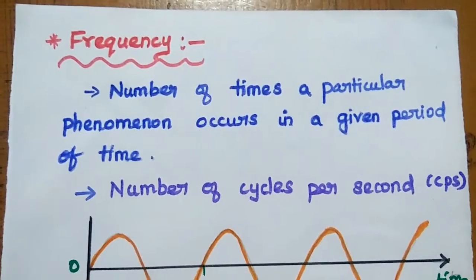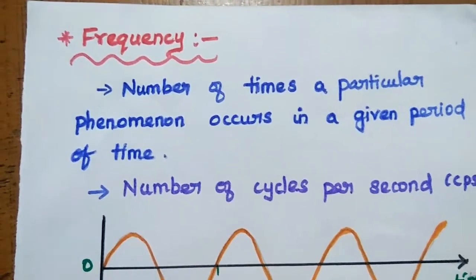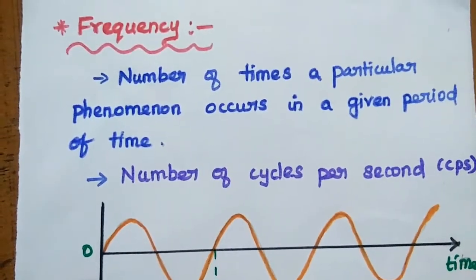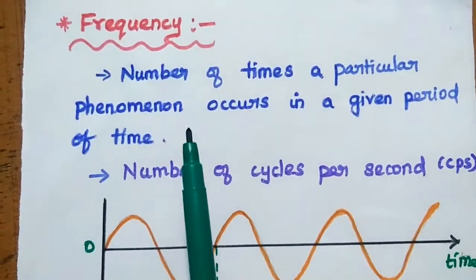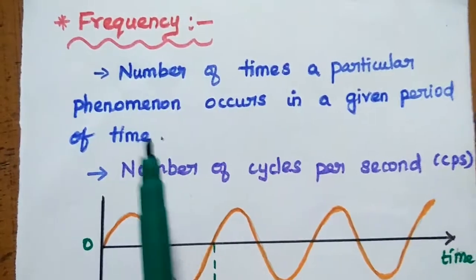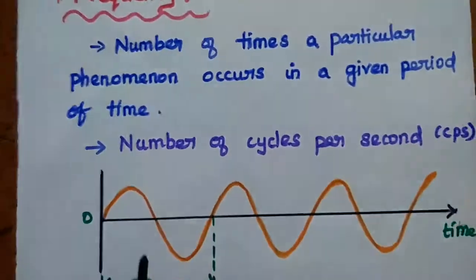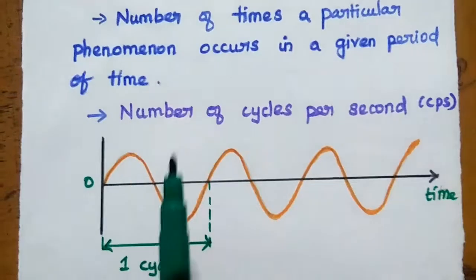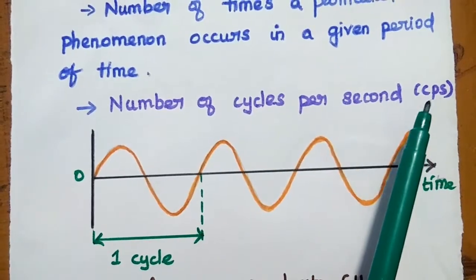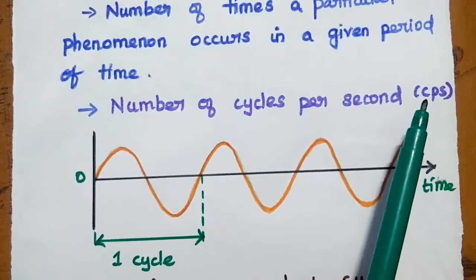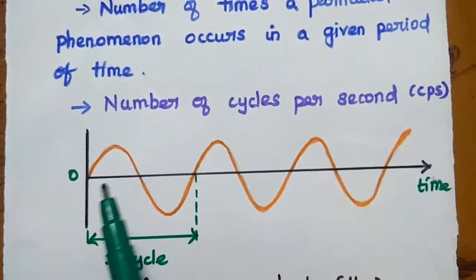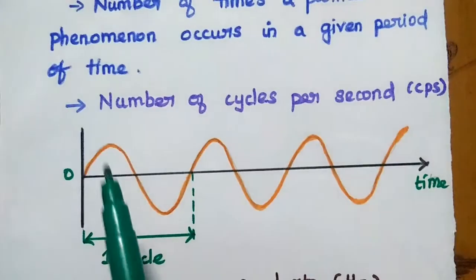Frequency and wavelength are terms we will use often in communication theory. Frequency is defined as the number of times a particular phenomenon occurs in a given period of time. In an electrical signal, frequency is the number of cycles per second — simply CPS. One complete cycle in an electrical signal, whether voltage or current, consists of a positive and negative half.